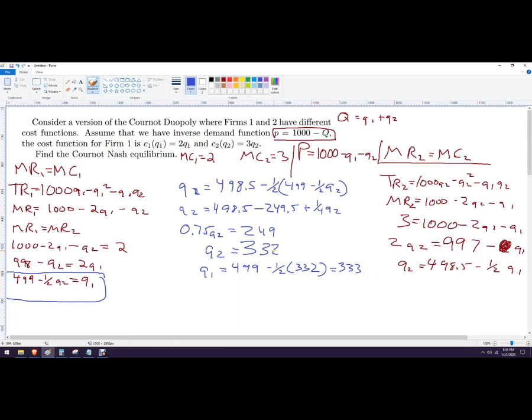So the total market is going to produce, we're back up to this thing here. The total market would produce this many units. And now we can just get the price. So the price in the market is going to be 1,000. You could add them together if you want, but it'll be 333 minus 332. And this is going to give us 335. So 335 is the price.